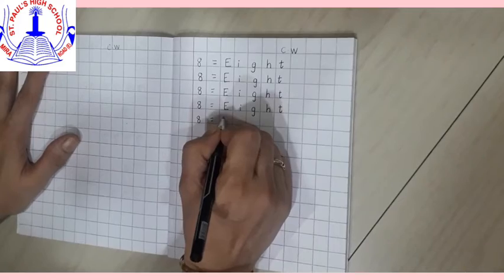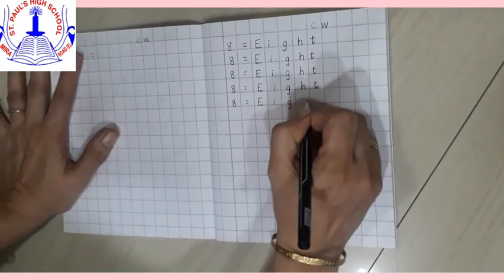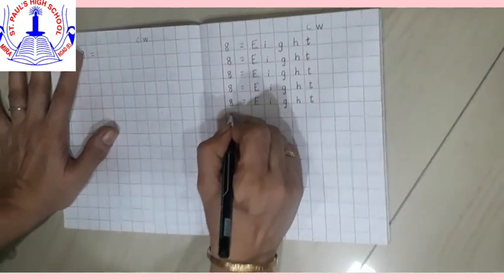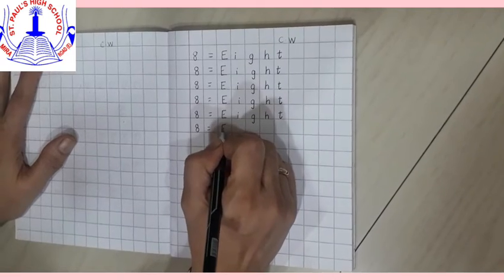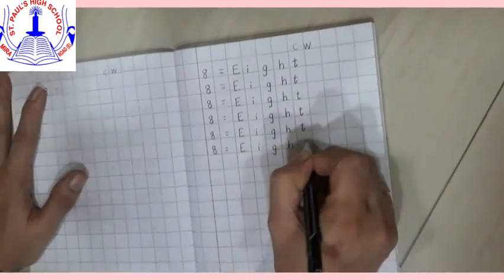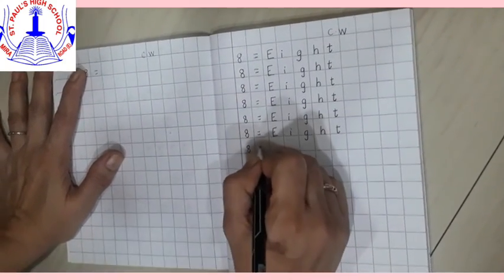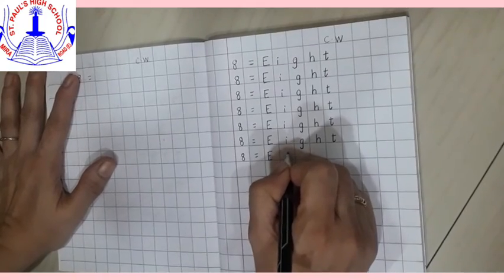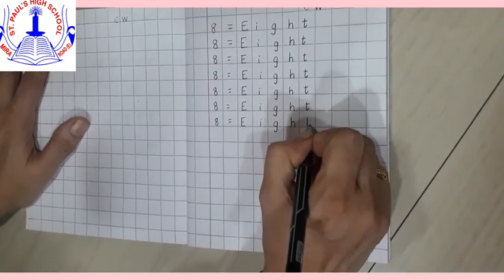8 put equal sign E-I-G-H-T. 8. 8 put equal sign E-I-G-H-T. 8 put equal sign E-I-G-H-T.